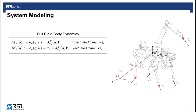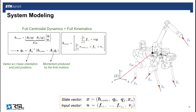We formulate our MPC problem by first defining our system dynamics. Starting from the full rigid body dynamic equations of a floating-based system, we extract an appropriate simplified model. Assuming sufficient control authority in the robot's joints, we consider the unactuated dynamics as a simplified template model. We want a minimal representation that keeps the problem computationally tractable but is also rich enough to capture the base-limb dynamic couplings. To this end, we treat joint velocities as inputs to our system instead of states, and the generalized velocities of the floating base are replaced with the system's centroidal momentum.